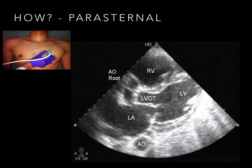This particular image is acquired with probe marker oriented to the right shoulder. Rotating the probe 90 degrees visualizes the heart in its short axis. When transitioning from the parasternal long view, simply rotate the probe marker from the left hip to the right hip. Again, the probe marker may also be pointed to the patient's left shoulder.